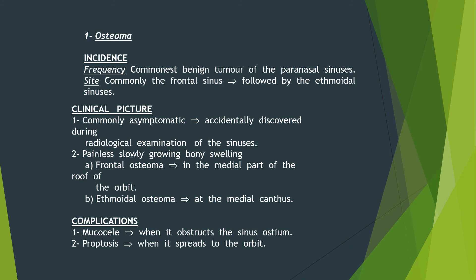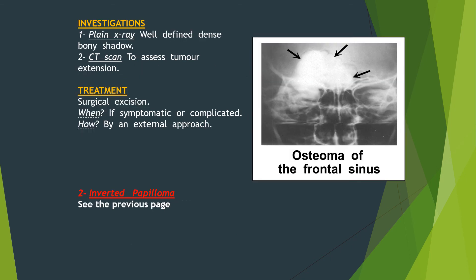Osteoma is the commonest benign tumor of the paranasal sinuses, commonly in the frontal sinus followed by the ethmoidal sinus. It is usually asymptomatic and accidentally discovered, presenting as a painless slowly growing bony swelling. Frontal osteoma is in the medial part of the roof of the orbit; ethmoidal osteoma is at the medial canthus. Complications include mucocele when it obstructs the sinus ostium, and proptosis when it spreads to the orbit. CT scan assesses tumor extension; treatment is surgical only if symptomatic or complicated, by external approach.